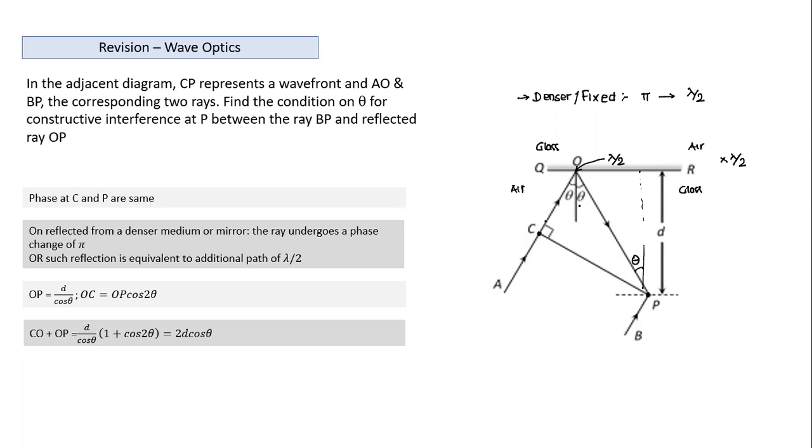What is this length CO plus OP equal to? This becomes D by cos theta common 1 plus cos 2 theta which comes equal to 2D cos theta. That's the length here.